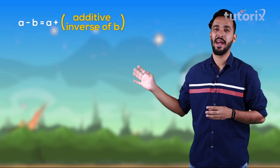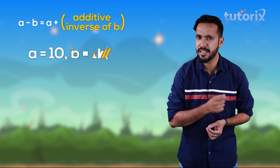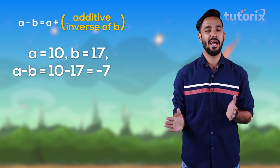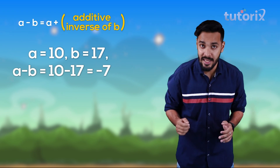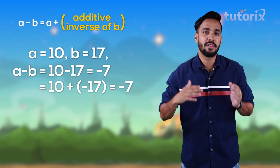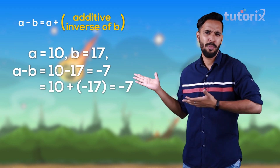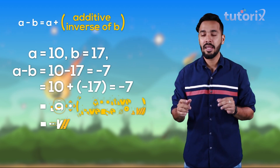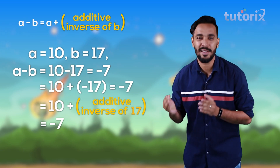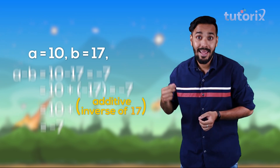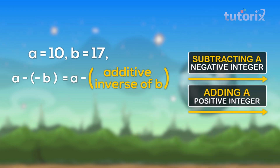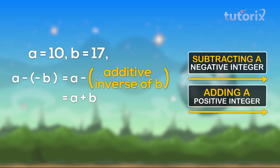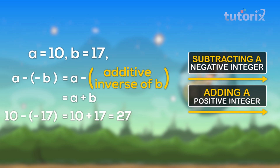Let's assign values: say a equals ten and b equals seventeen. So a minus b is ten minus seventeen, which is minus seven. Ten minus seventeen can also be written as ten plus minus seventeen, which equals minus seven. This means ten plus the additive inverse of seventeen equals minus seven. Now if we have something like a minus minus b, it is actually equal to a minus the additive inverse of b, which is nothing but a plus b. So ten minus minus seventeen is actually equal to ten plus seventeen, which is twenty-seven.